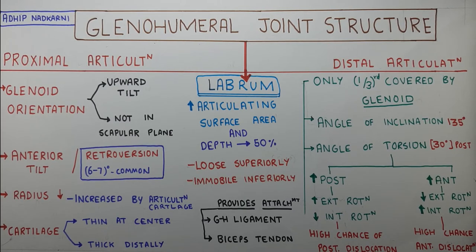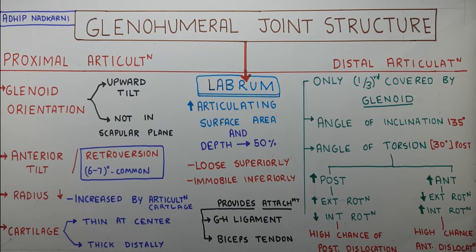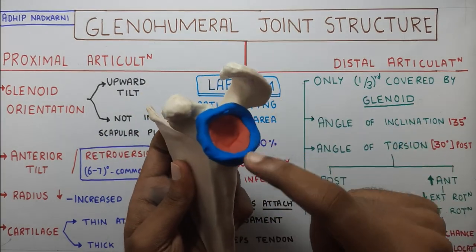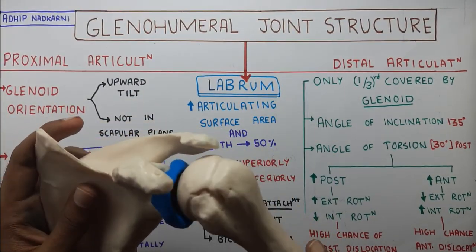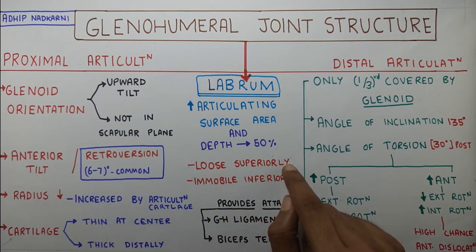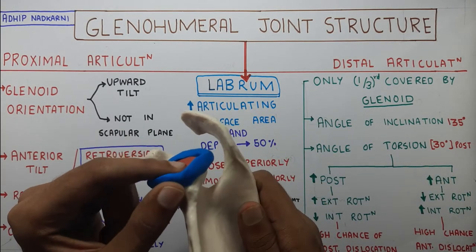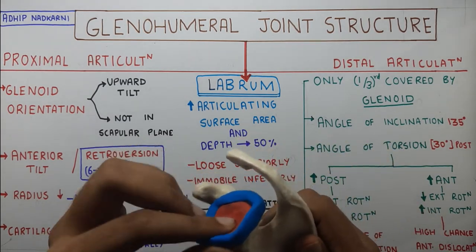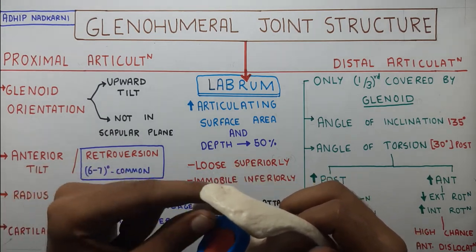Coming to the last part - the labrum. The labrum basically increases your articulating surface and also increases the depth, providing around 50% of the depth to your glenoid fossa. The glenoid fossa is very shallow on its own, but the labrum present around the glenoid fossa gives it depth, allowing the humerus to nicely sit in the glenoid fossa. The labrum is loose superiorly and very immobile inferiorly. Superiorly there is also the attachment of the biceps tendon, which we will study in further topics.